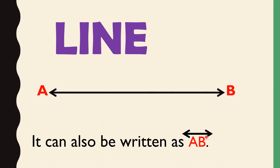The arrow shows that a line extends in both directions with no end points. This arrow shows there is no end to this line — it can extend as much as it wants. There is no ending point of this line.